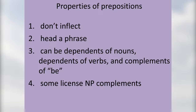The first property is that prepositions don't inflect. This can actually help you distinguish them from adjectives. If you find a word that has a comparative and a superlative form, it's definitely not a preposition. They don't have any affixes, unlike some other classes like adjectives, adverbs, verbs, and nouns, which can become plural. The other three properties are more complex, and we're going to talk about those at length.